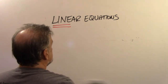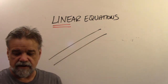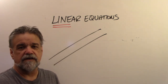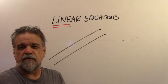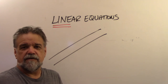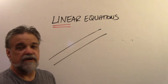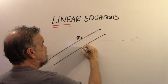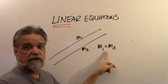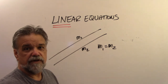Parallel lines are lines in the same plane that never intersect. Parallel lines point in the same direction — they have exactly the same slope. If M1 is the slope of line 1 and M2 is the slope of line 2, then M1 equals M2 if and only if the lines are parallel.